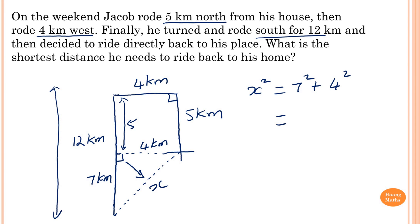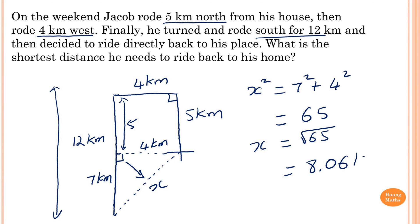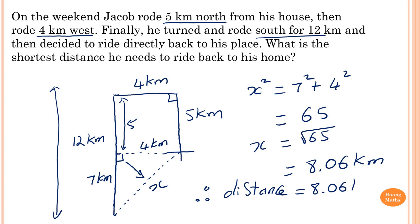That gives 65, so x equals the square root of 65, which equals 8.06 correct to 2 decimal places. Therefore the shortest distance back to his home is 8.06 kilometers.